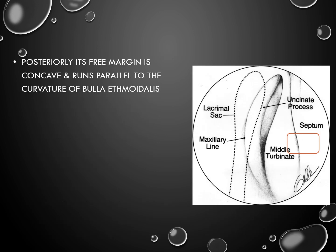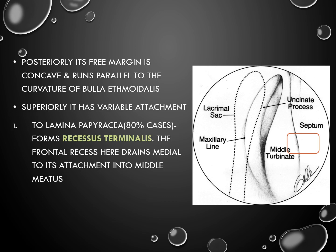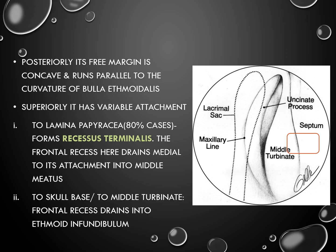Posteriorly, its free margin is concave and runs parallel to the curvature of the bulla ethmoidalis. Superiorly, it has variable attachments — to the lamina papyracea in 80% of cases, in which case it forms a recessus terminalis. The frontal recess here drains medial to its attachment into the middle meatus.